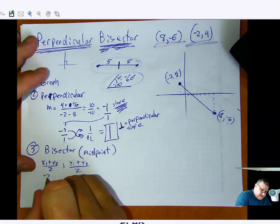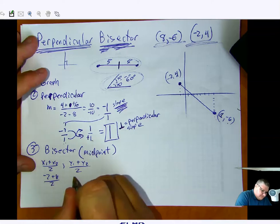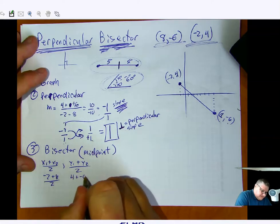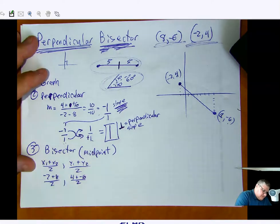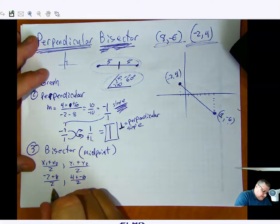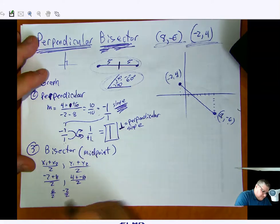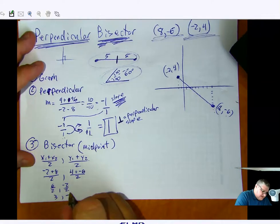Okay, so I got negative 2 plus 8 all over 2. 4 plus negative 6 all over 2. And so that gives me 6 over 2. That gives me negative 2 over 2. That gives me 3, comma, negative 1.